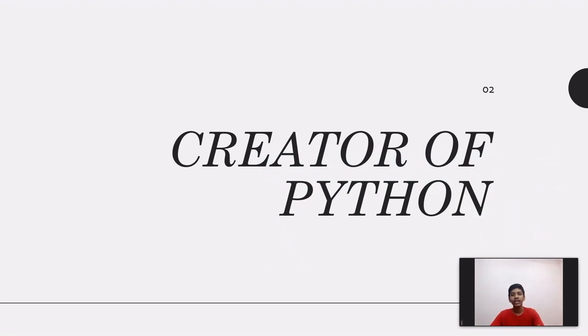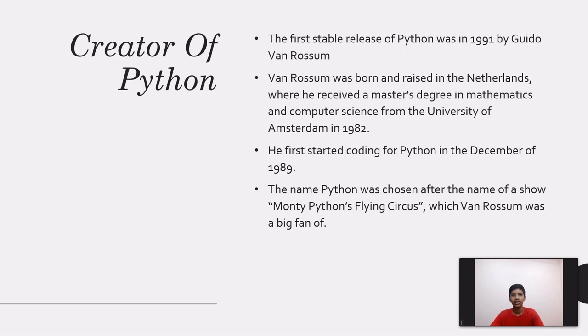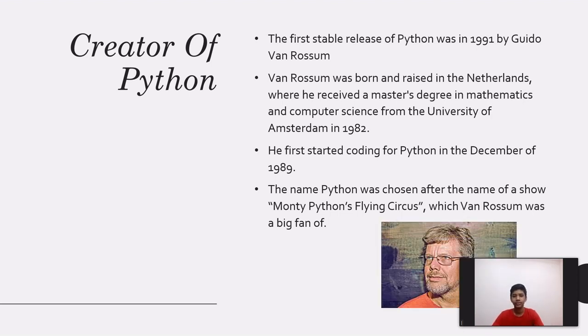Now, who's the creator of Python? Python was first released in 1991 by Guido Van Rossum. He was born in Netherlands, where he completed his masters. He first started coding for Python in the December of 1989. The name Python was taken from a show, Monty Python's Flying Circus, which Van Rossum was a huge fan of. This is the man behind Python.